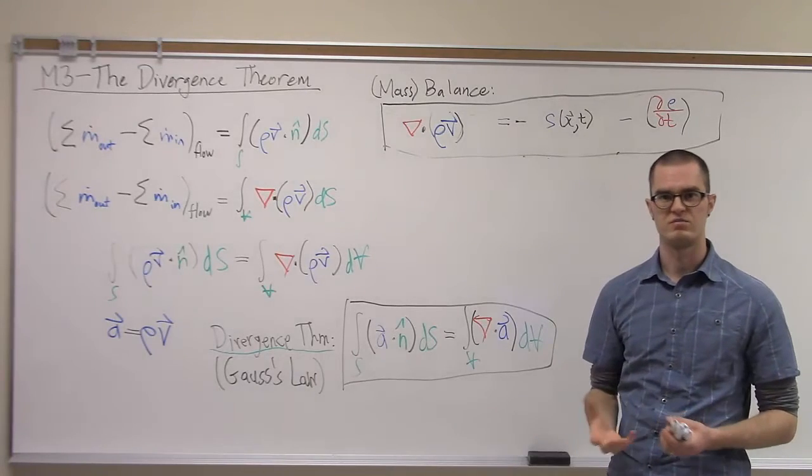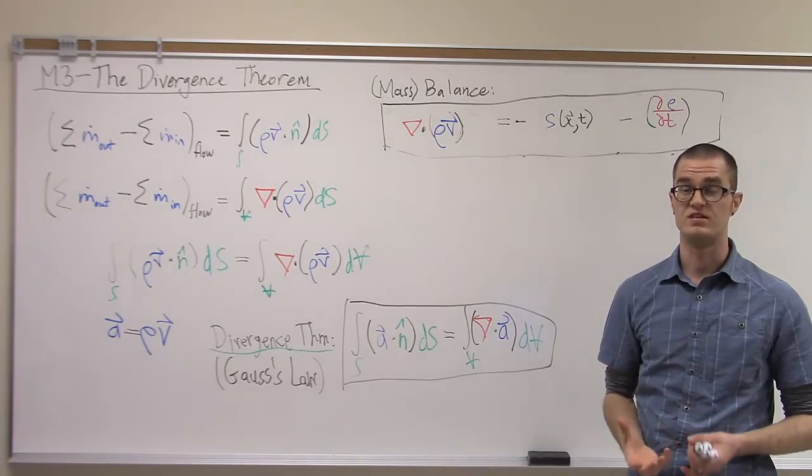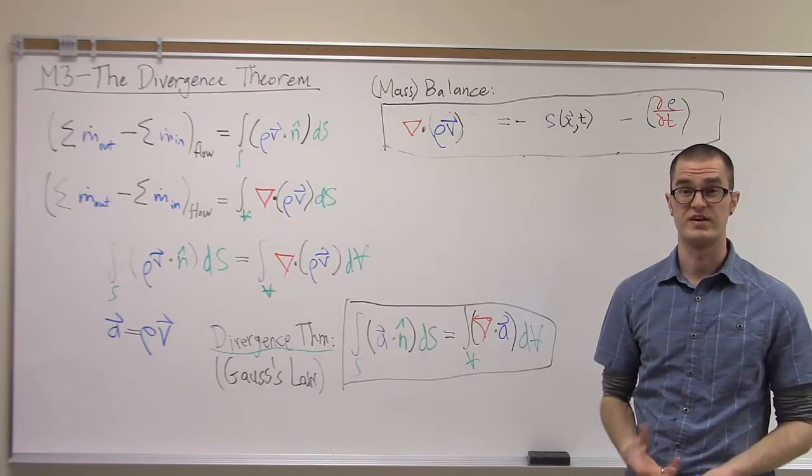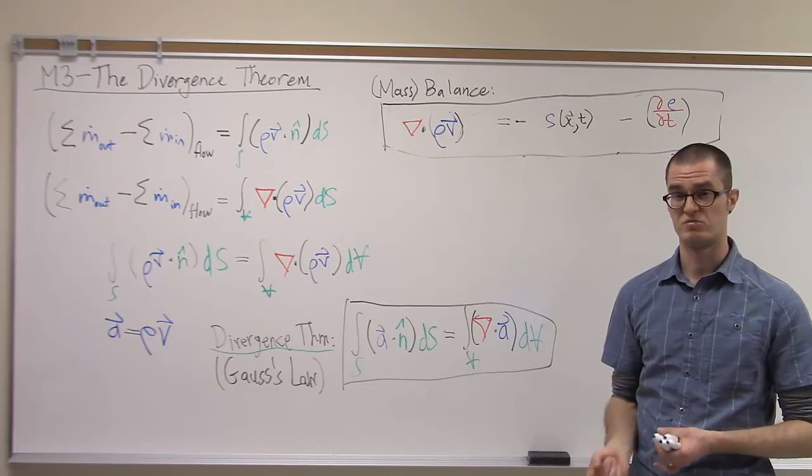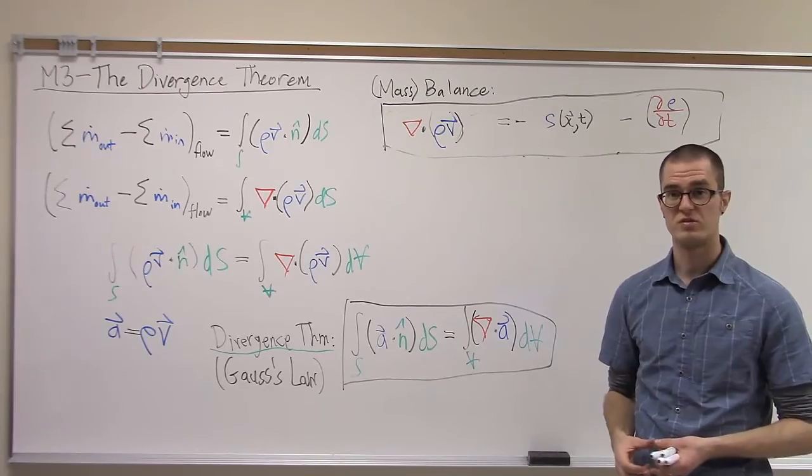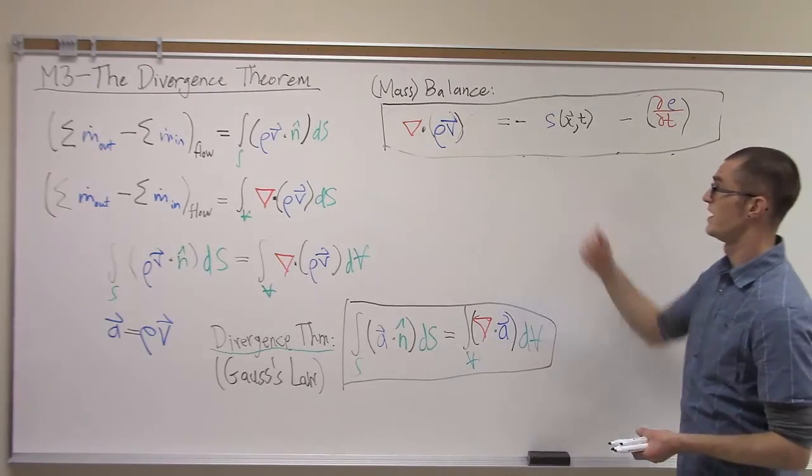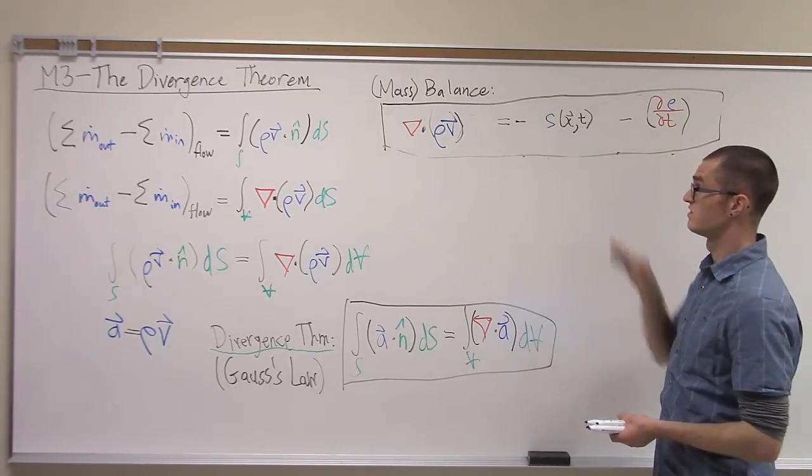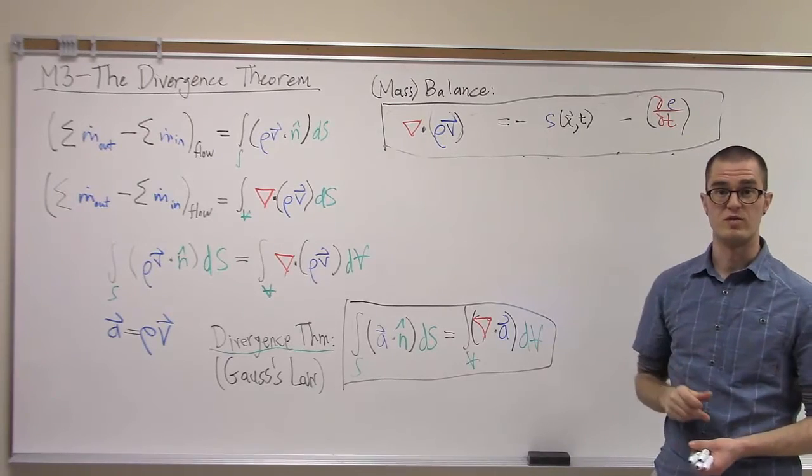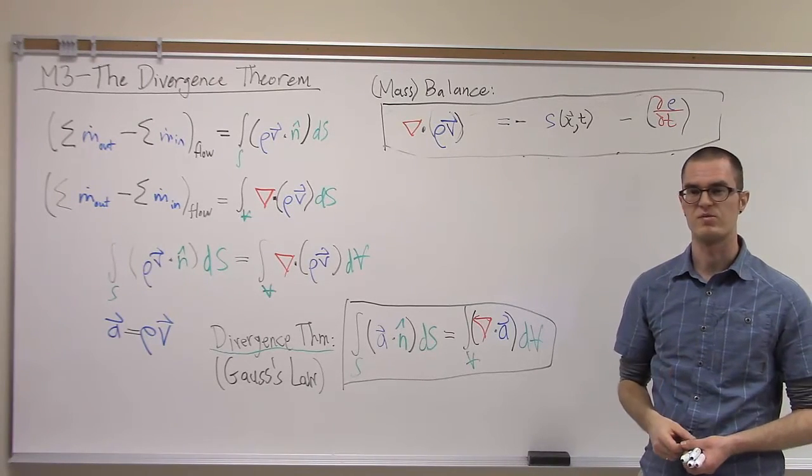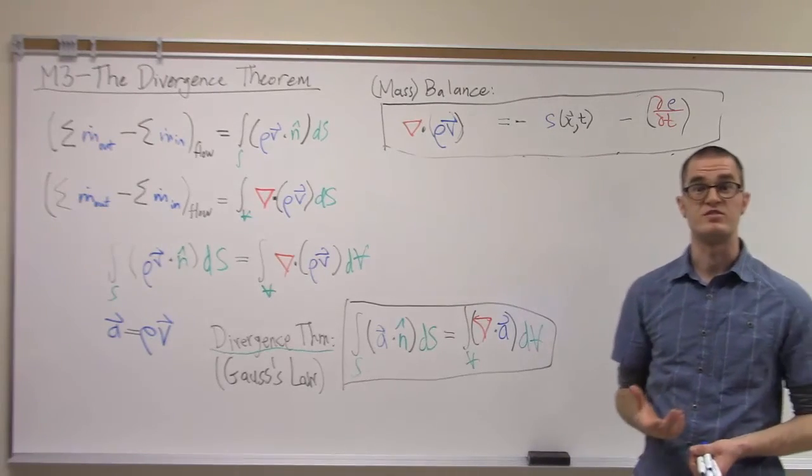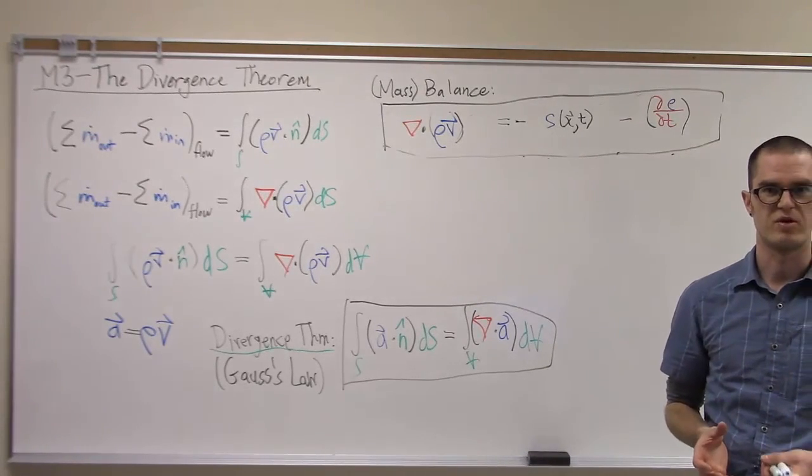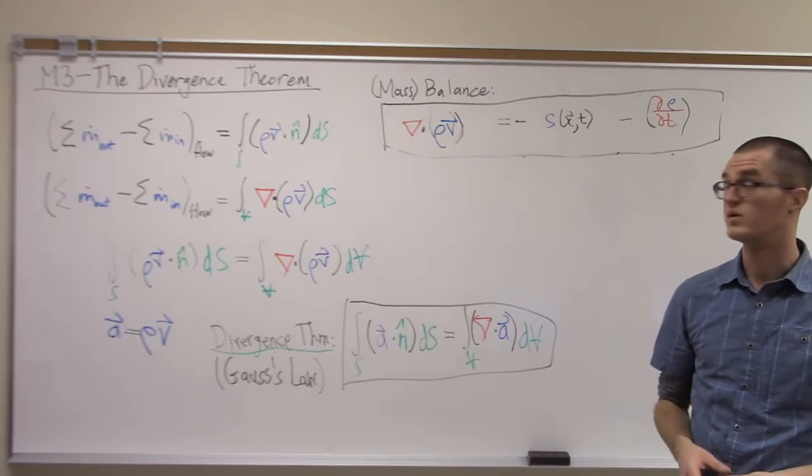Which one is more convenient to use depends on the type of problem we're solving. In certain types of problems, we might want to write our solution procedure in terms of the integral form. In other cases, we may have a situation where we can solve it in differential form at a point. It just depends on the problem. The point is that the divergence theorem gives us options - we now have different ways that we can approach the problem depending on the situation.